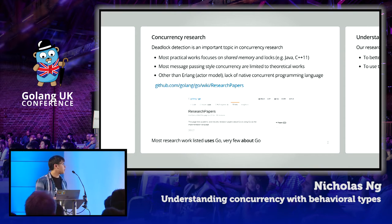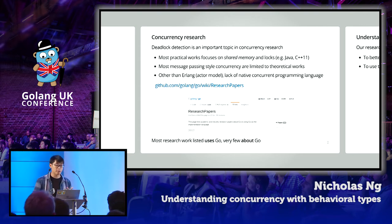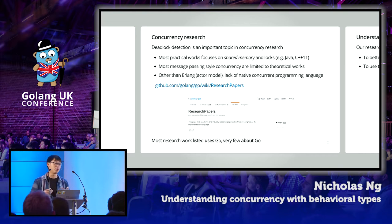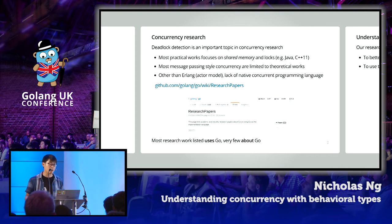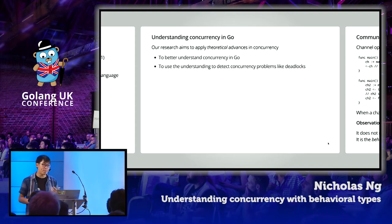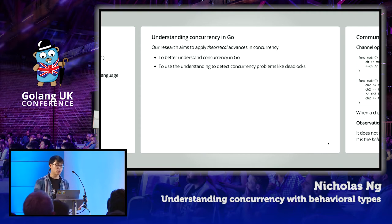Looking at research papers on Go — which can be found in the Golang GitHub wiki — even though there are many papers that use Go, very few are actually about Go itself. Many use Go to implement distributed systems or analyze DNA sequences, but very few address Go as a language. It is our research aim to apply theoretical advances in concurrency to Go so that we can better understand Go's concurrency and use that understanding to detect concurrency problems such as deadlocks.